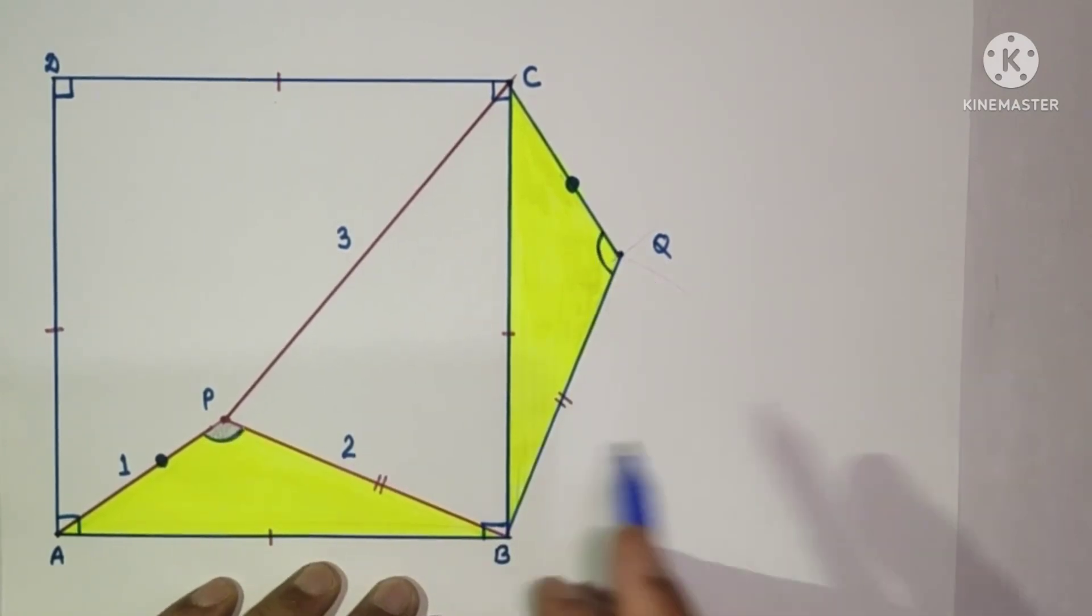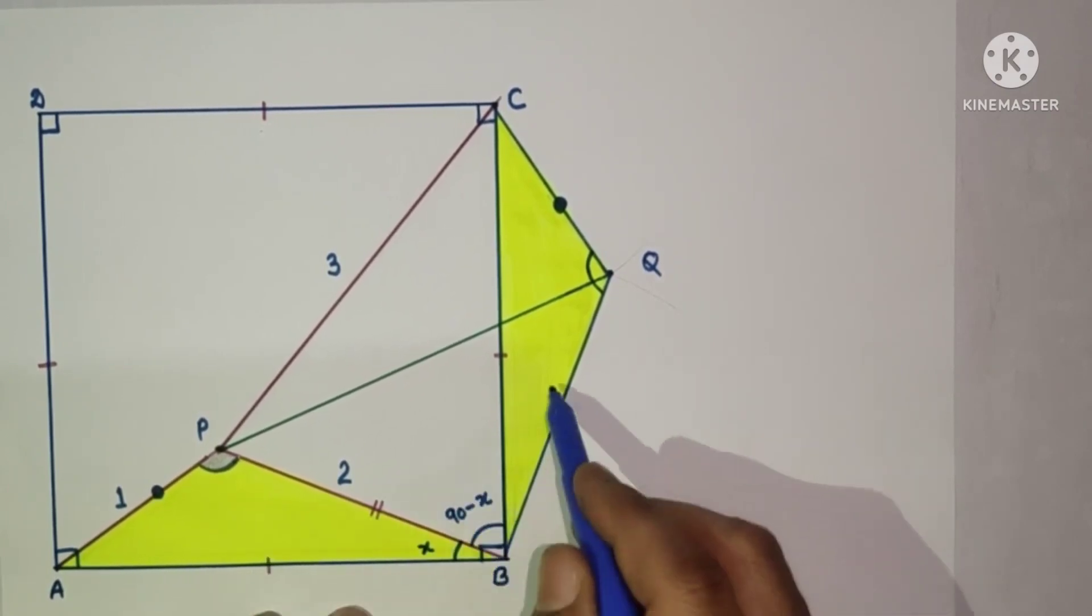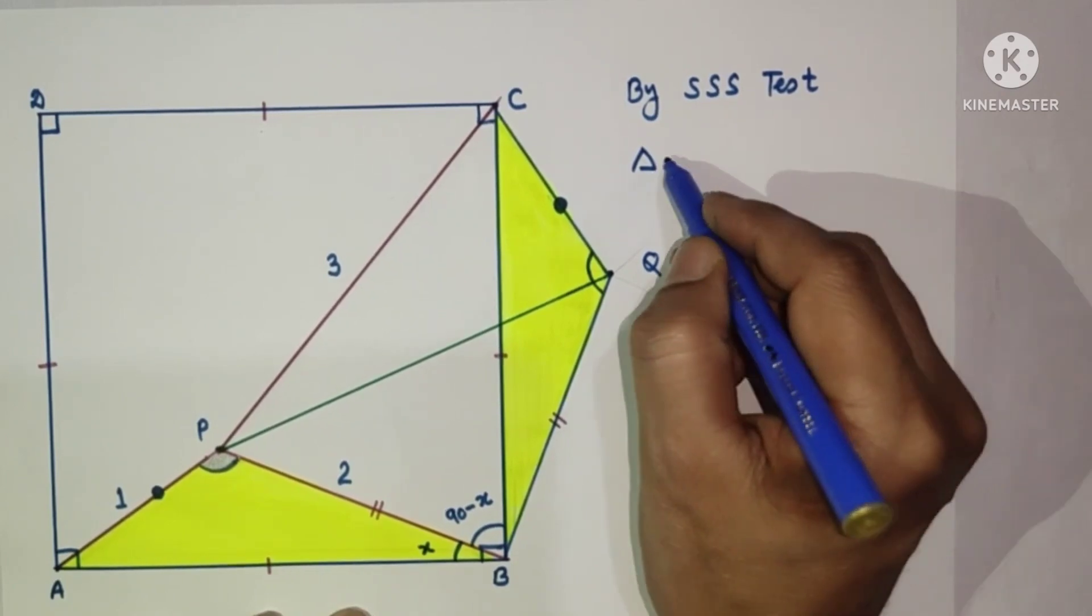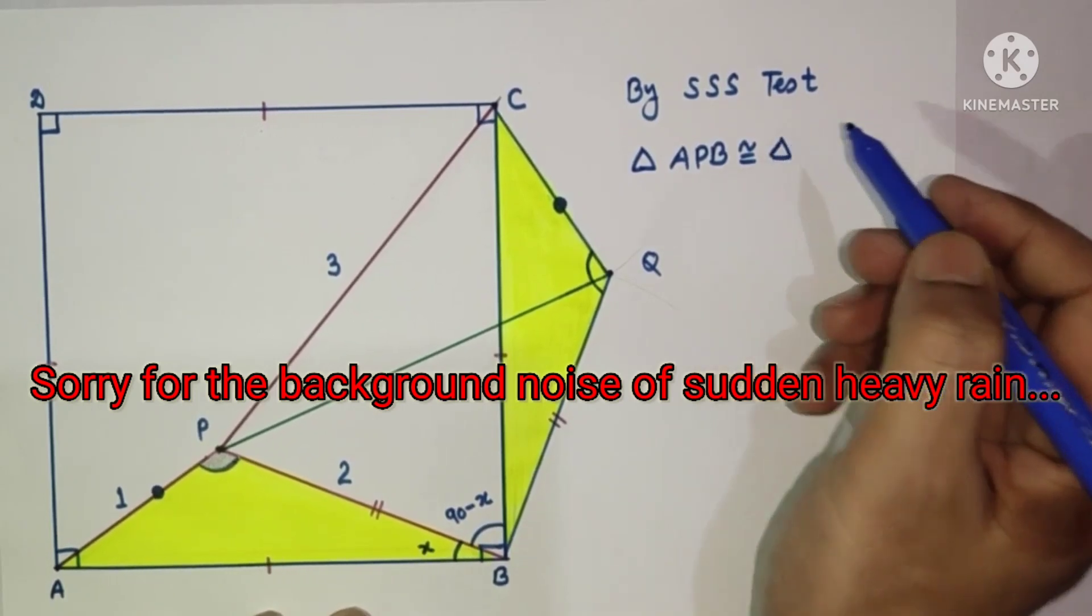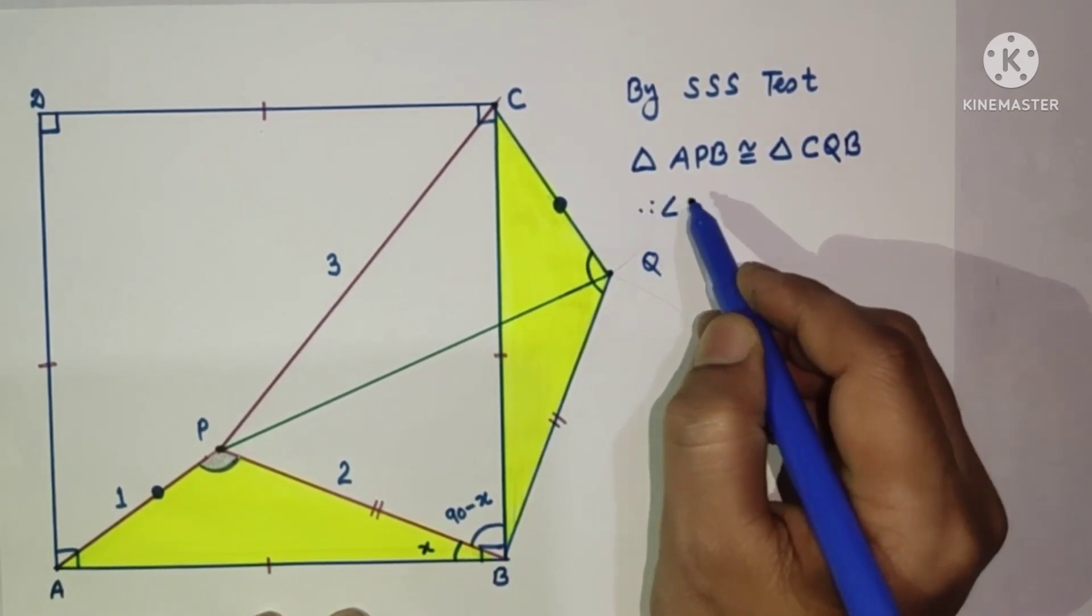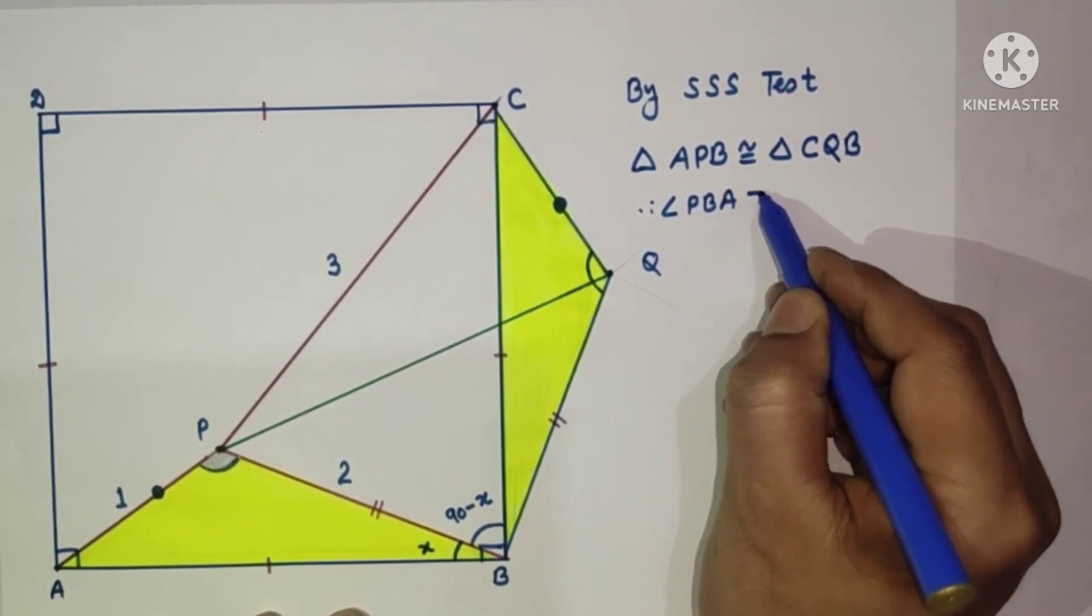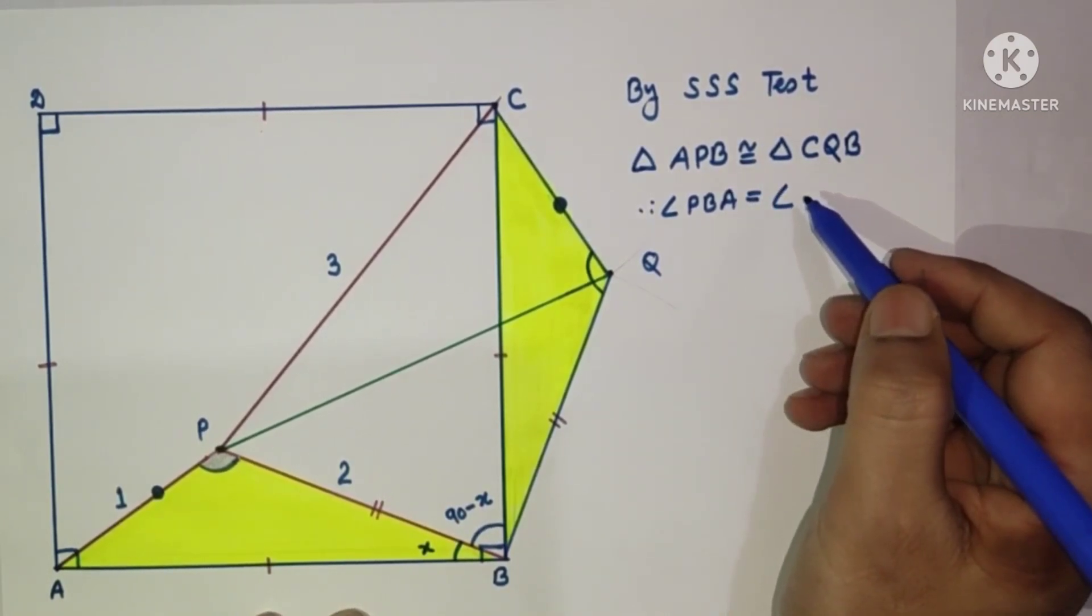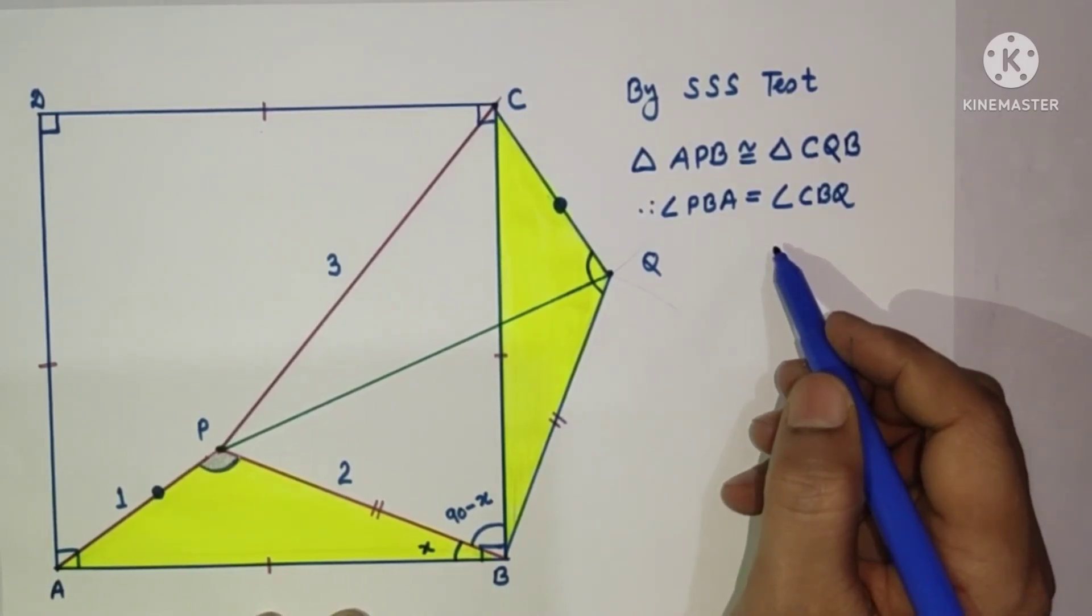If we join PQ, let us suppose this angle is x, so this will be 90 minus x. Since these two triangles are congruent, triangle APB is congruent to triangle CQB. Therefore, angle PBA is equal to angle CBQ. Corresponding angles of congruent triangles are congruent.